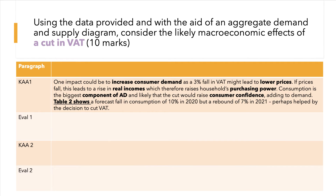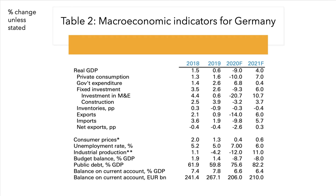First KAA point: one impact could be to increase consumer demand, as the 3% fall in VAT might lead to lower prices in the shops. If prices go down, this can cause a rise in real incomes, lifting a household's purchasing power. Consumption is the biggest component of demand — C plus I plus G plus X minus M — so the cut would likely increase incomes and raise consumer confidence, adding to demand. Table two shows a forecast falling consumption of 10%, but a rebound of 7% next year, perhaps helped by the decision to cut VAT.